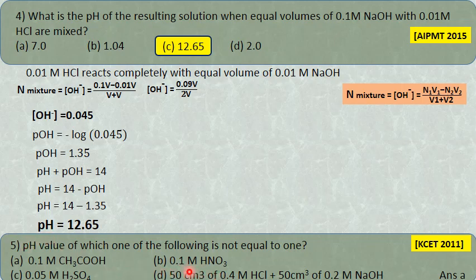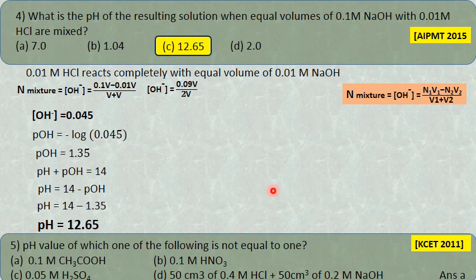For the acid-base mixture option: volume times molarity gives 2 and 10 respectively; 20 minus 10 = 10, divided by 100 = 0.1, which is 10⁻¹. So that also gives pH = 1. Be careful—a common mistake is to assume 0.05 is not equal to 0.1, so they eliminate the wrong option. Actually 0.1 mole of acetic acid does not give pH = 1.